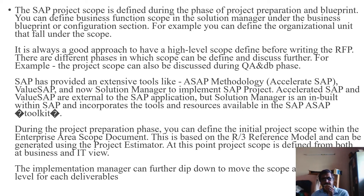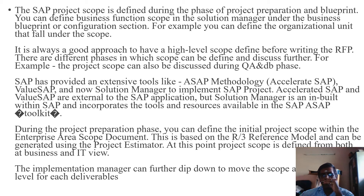Now we also have SAP Activate, which is an agile methodology for SAP S/4HANA projects. To implement any kind of SAP project, Accelerated SAP, Value SAP, or SAP Activate are external to the SAP application, but Solution Manager is built within SAP and incorporates tools and resources available in the SAP toolkit. During the project preparation phase, you can define the initial project scope within the enterprise area scope document, based on the R/3 reference model. At this point, the project scope is defined from both the IT and business level.